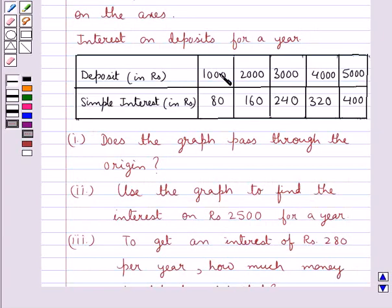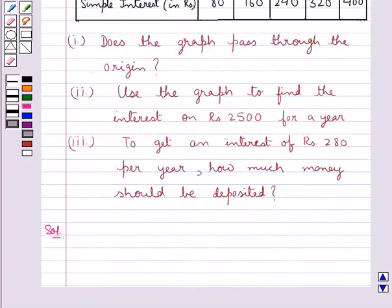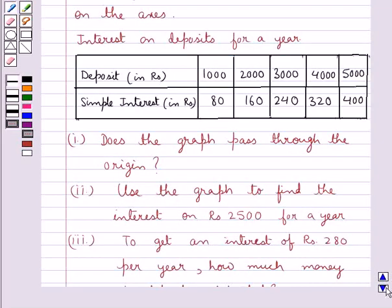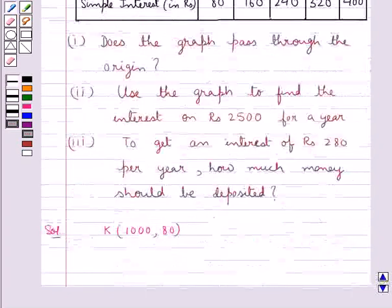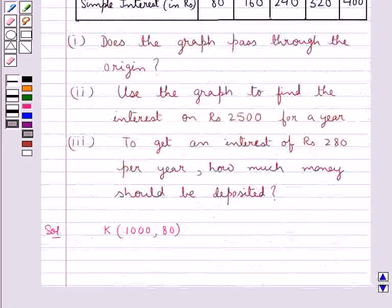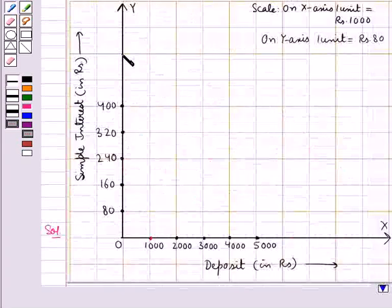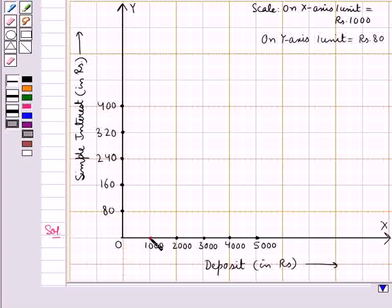Now we shall plot the values from this table on the graph. The first point is K with coordinates (1000, 80), where 1000 is the x-coordinate (deposit) and 80 is the y-coordinate (simple interest). We locate 1000 on the x-axis, then move up along the y-axis to reach the point corresponding to 80, and mark this as K.